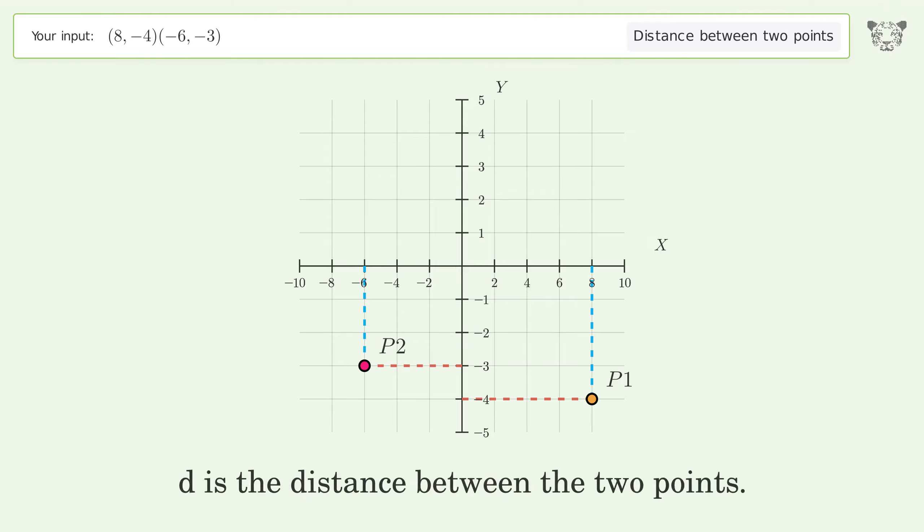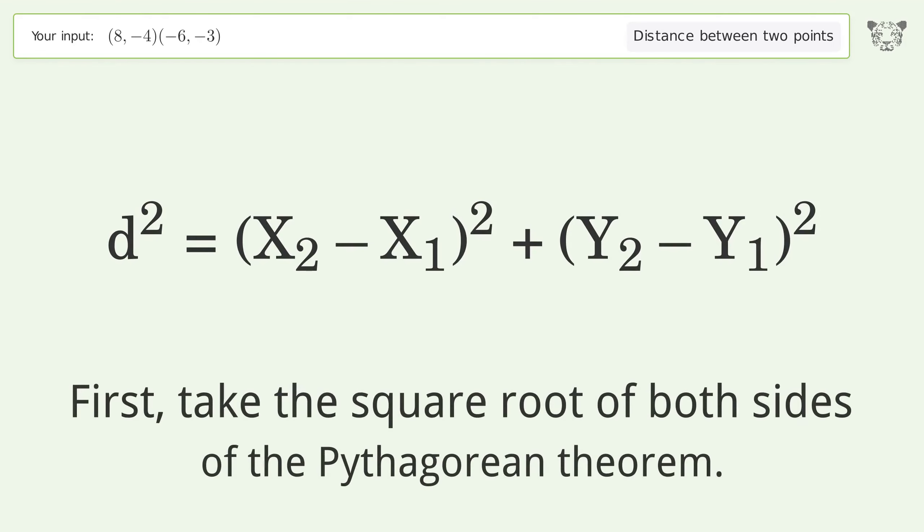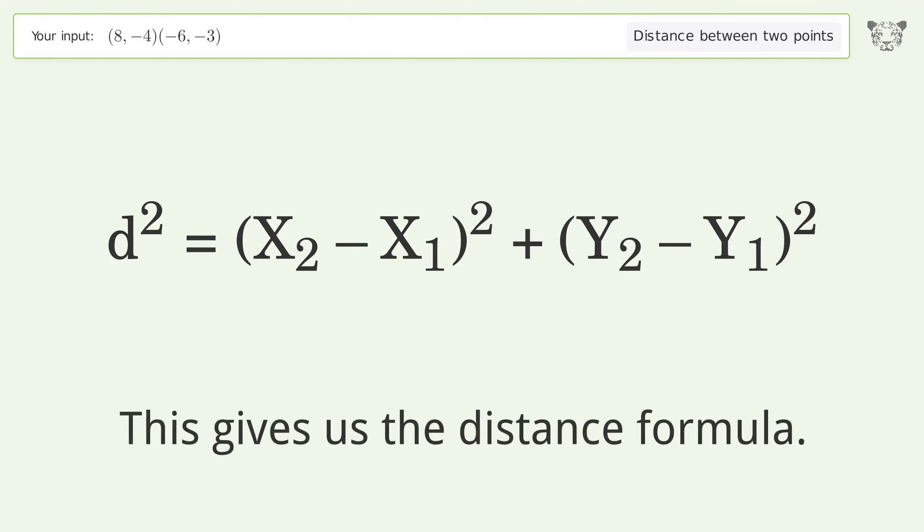d is the distance between the two points. First take the square root of both sides of the Pythagorean theorem. This gives us the distance formula.